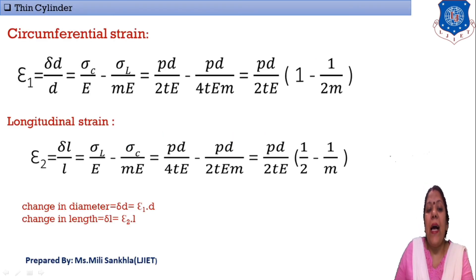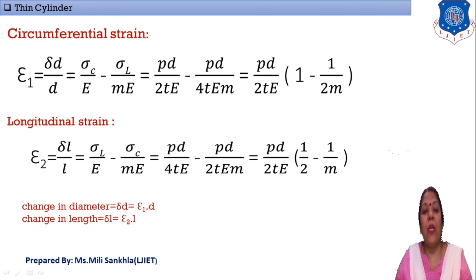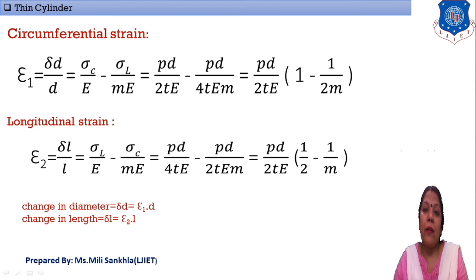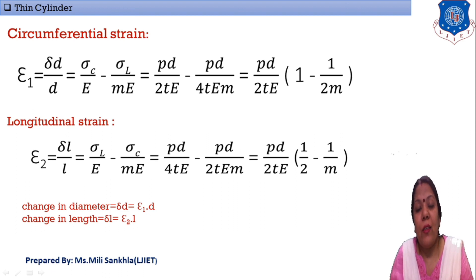Change in diameter ΔD = ε₁ × D, and change in length ΔL = ε₂ × L. In today's session we discussed theory: thin cylinder, thick cylinder, then strains — hoop strain, longitudinal strain — and also the stresses induced in thin cylinders. Next session we will discuss further theory. We stop here for now.